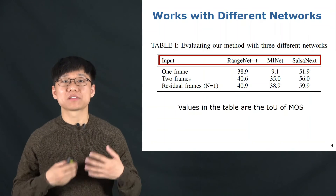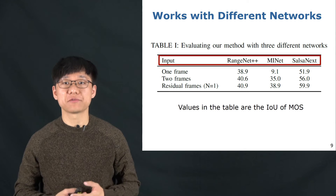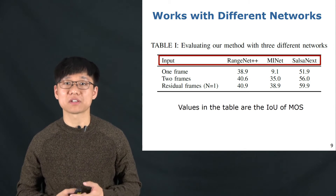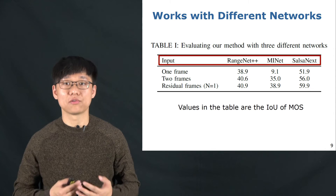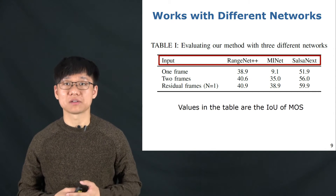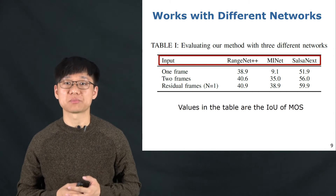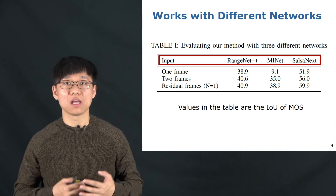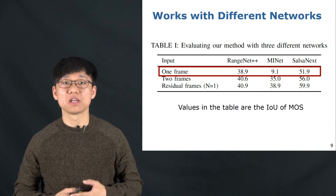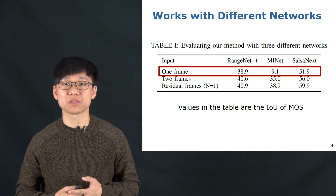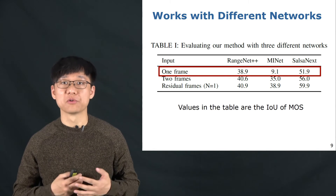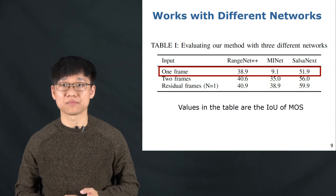We tested three different setups with three different networks that have been used to achieve semantic segmentation in the past: RangeNet++, SalsaNext, and MinNet for moving object segmentation. As shown in Table 1, the first setup is to train the three range projection-based networks directly with the labels for moving and non-moving classes.